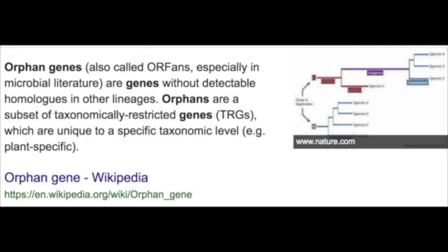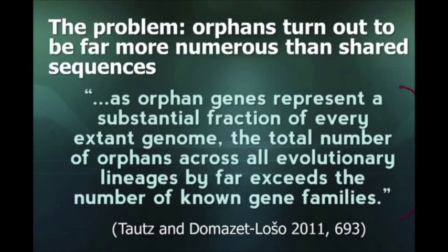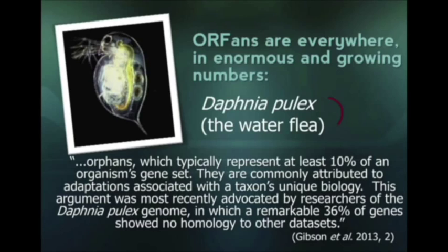The working assumption had been that, given common descent and the fact that most housekeeping genes are shared among living things and are highly conserved — including the prior assumption that evolution occurs by extremely small changes — orphan genes should be rare if not non-existent. However, as scientists sequenced more genes from different organisms, they are discovering that roughly 10 to 40% of each genome's protein-coding sequence is new, unlike any other known protein-coding sequence. These are orphan genes.